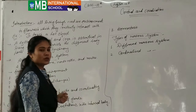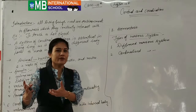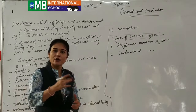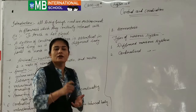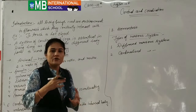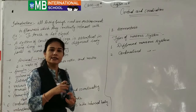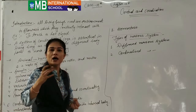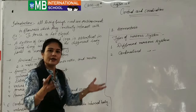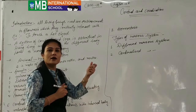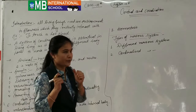Let me give you an example of what control and coordination means. How can our body control its different organs and their functions? For example, when we touch a hot object, our hand feels hot and we immediately remove our hand from the hot object. These senses are felt by our body — this is control. The sense is given by our external environment, but it is controlled by our body — exactly this is coordination.